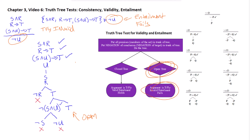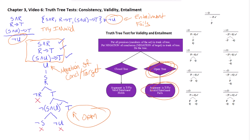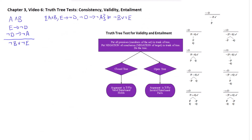Remember what we're doing here: we're trying to see if there is a way to make all the premises true and the negation of the conclusion true — that is, all the premises true and the conclusion false. Since the tree is open, it is possible to do exactly that, which gives us invalidity and failure of entailment.